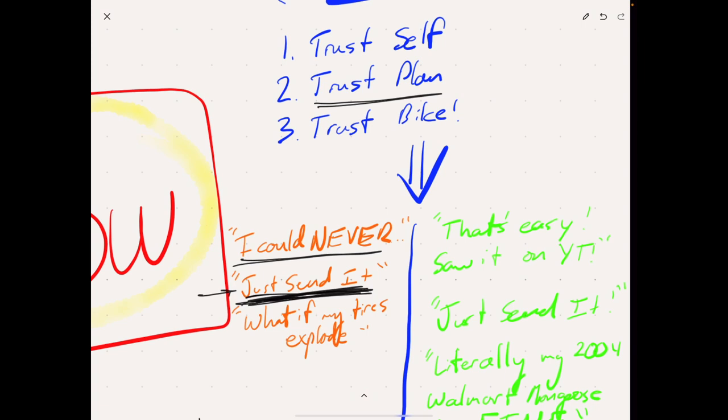Now, obviously we got to trust our bike. So a great out of flow belief that can exist is what if my tires explode? What if my, you know, Oh, I haven't done that tune up. I hear a noise coming out of my shock. What's that rattling in my down tube? What's that rattling in my wheel? Why is it that when I turn left, my bike starts slipping?